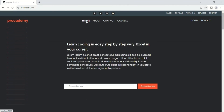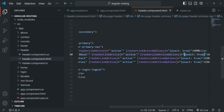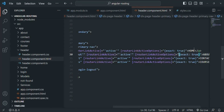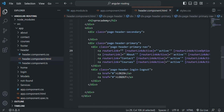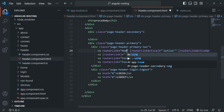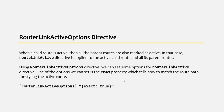That's what I wanted to show in this lecture. I'll change the path for the Home link back to 'home' instead of empty string. Just remember: when a child route is active, all parent routes are also marked as active. The routerLinkActive directive is applied to the active child route and all its parent routes. To avoid this behavior, use the routerLinkActiveOptions directive and set the exact property to true.